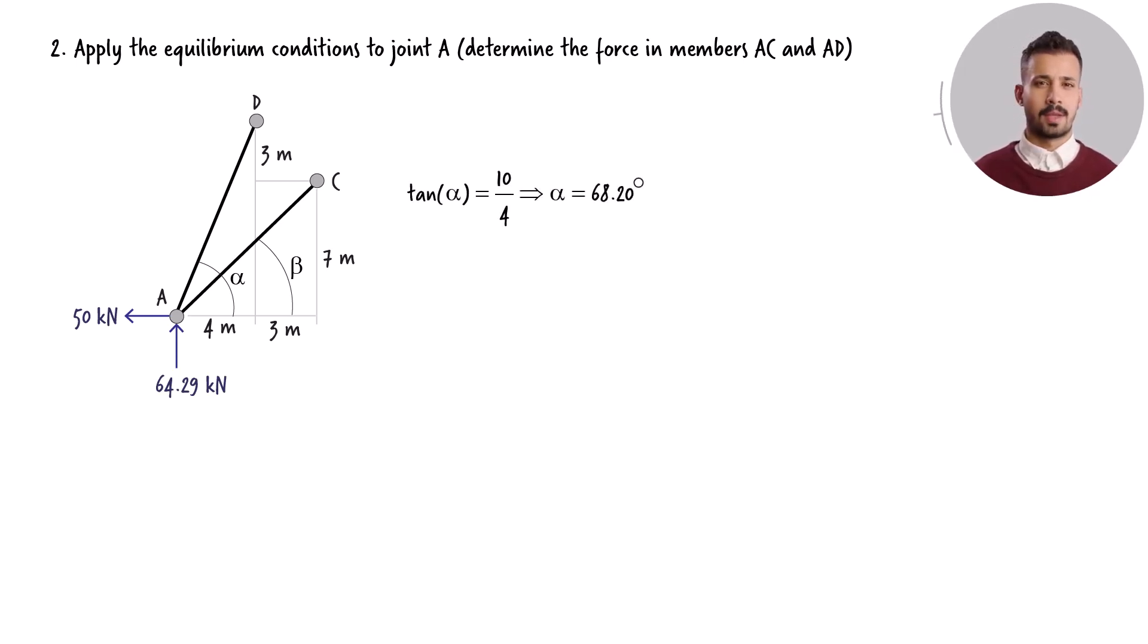Tangent of alpha is 10 over 4, which leads to an alpha value of 68.2 degrees. For beta, the tangent value is 7 over 7, resulting in a 45-degree angle.